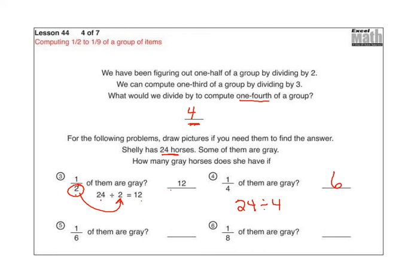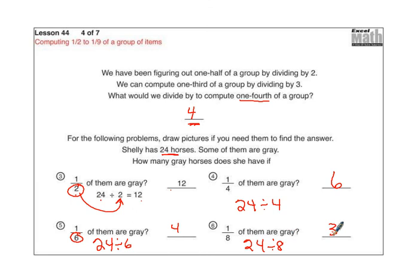So what you should have done for number 5: if 1 sixth of them are gray, remember we're dividing by the denominator. So you're doing 24 divided by 6, and 24 divided by 6 is 4. So 4 of them are gray if 1 sixth of them are gray. And the last one, of course, you're going to divide by 8. So 24 divided by 8 is equal to 3.